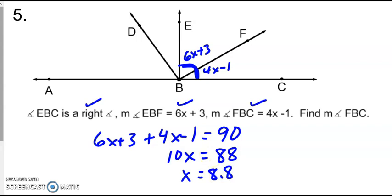And just like all of our problems here, just because we found X, that doesn't mean we answered our question. Let's go back and read it. We want to find the measure of angle FBC. So we need to plug in 8.8 into 4X minus 1. So using our calculator, we get that to be 34.2 degrees.